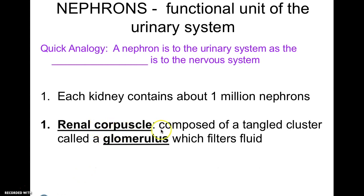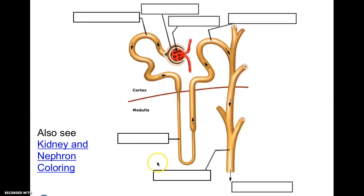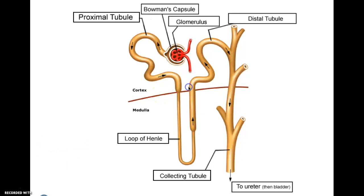Here we have our nephron, which you'll be labeling — it's also in the Quizlet. Filtration occurs in the glomerulus; that's where your artery comes in. There would be capillaries all around it. We have Bowman's capsule — part of it has been removed so you can see the glomerulus, but normally it would be covering it completely, like a baseball mitt covering a ball. You don't want this structure to be damaged, because otherwise it would filter too much.